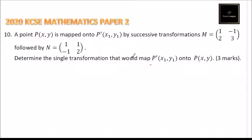Determine a single transformation that would map P'(x₁, y₁) onto P(x, y), and you get 3 marks. What we need to do here is to get a single transformation that maps P onto P'. Once we get a single transformation, then we will be able to get the inverse of that transformation.